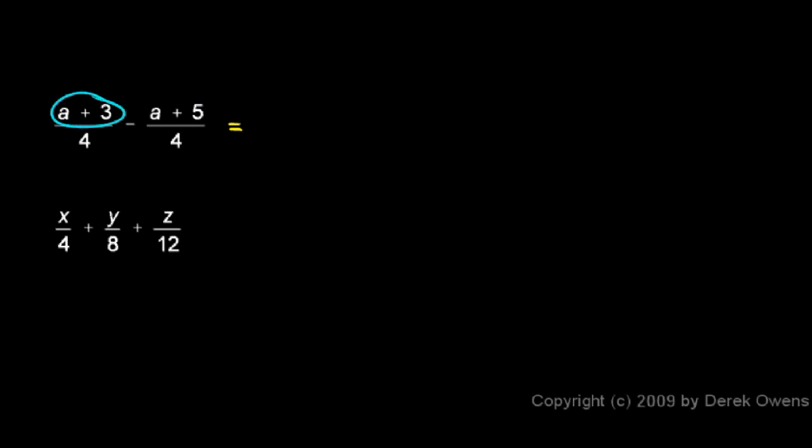So I can write (a+3) minus (a+5) all over 4. Now notice that I put in those parentheses - that's to emphasize that I'm taking one thing, the a+3, and subtracting another, the a+5, and that's what I had.